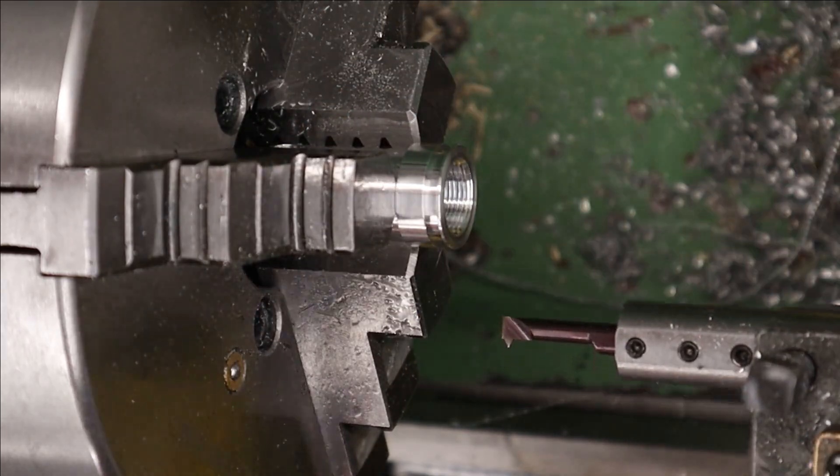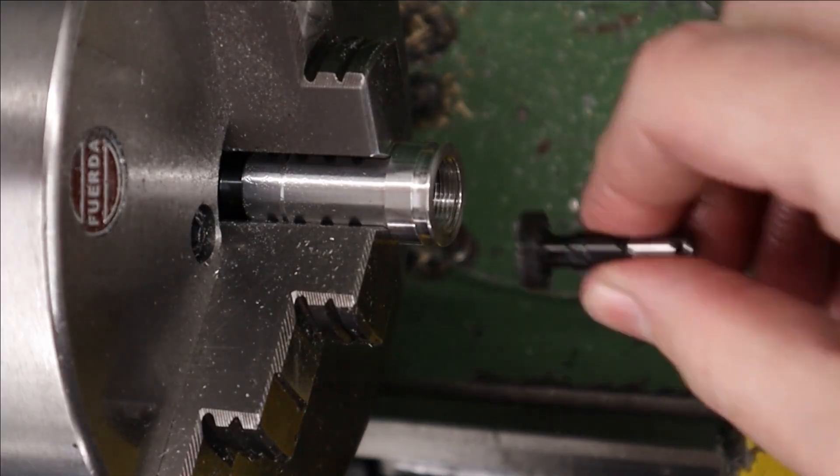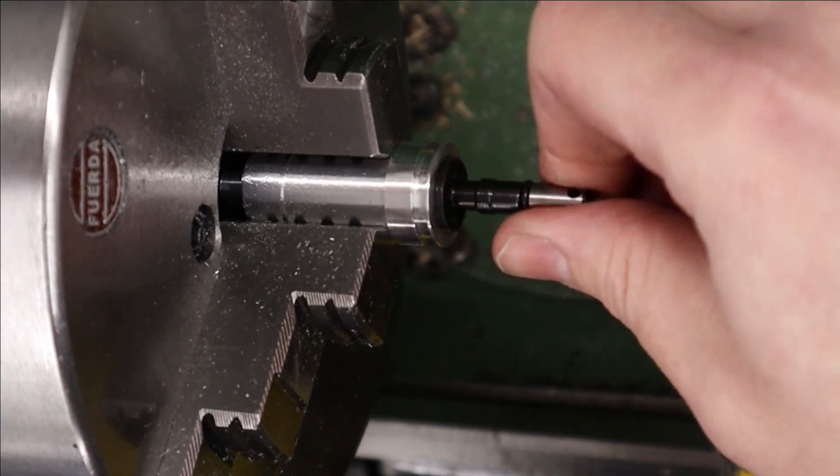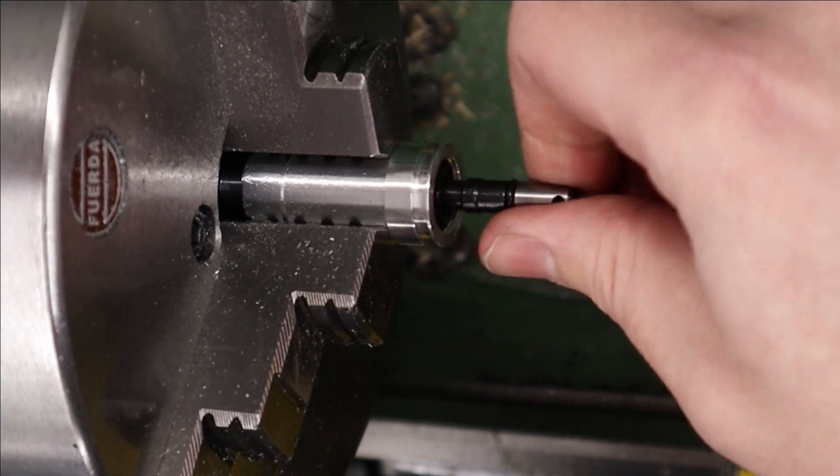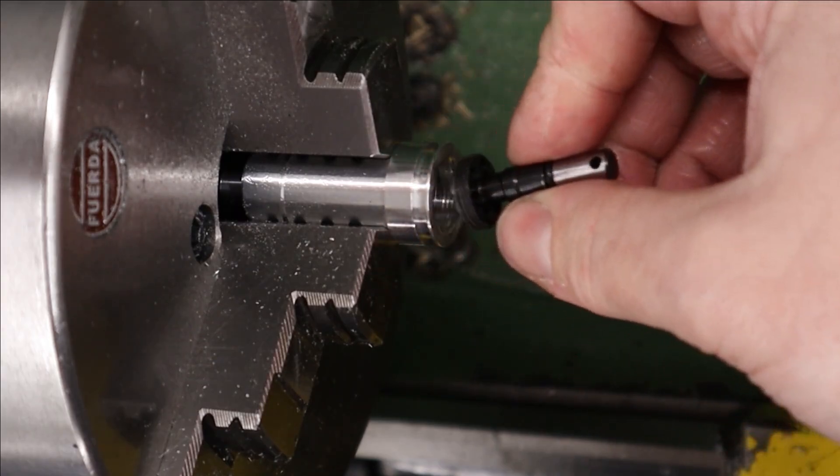We need this thread to be a nice close fit on the valve adjuster so it doesn't rattle when it's being shot so we're using it as a test plug and once we get the fit we want we can take the part out the lathe and it's pretty much finished.